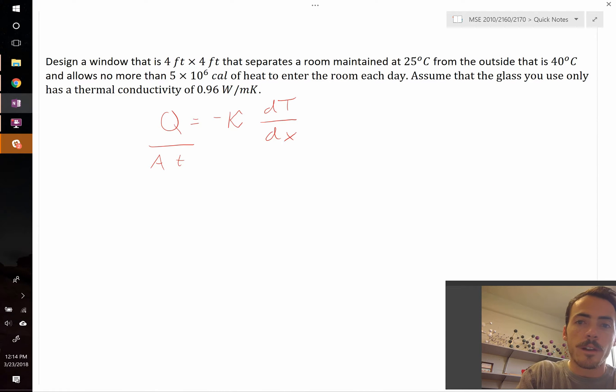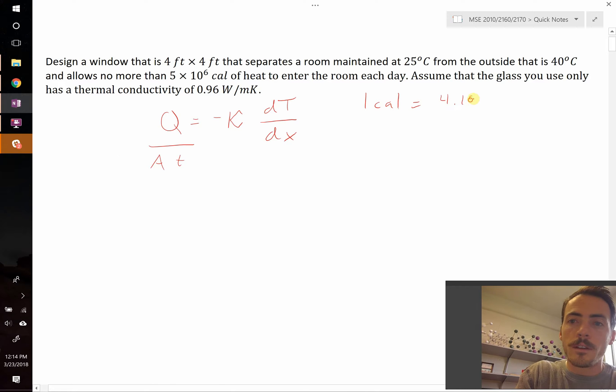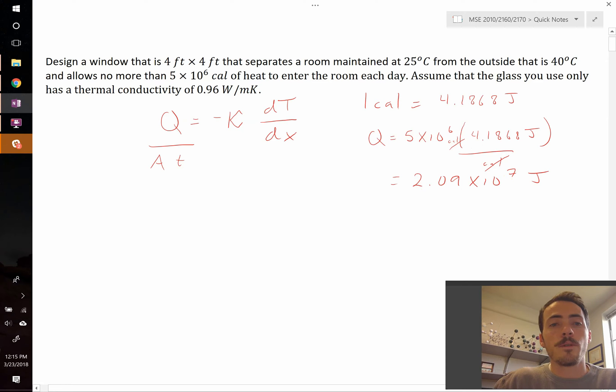We know that one calorie equals 4.1868 joules. Therefore total Q is going to be equal to 5 times 10^6 multiplied by 4.1868 joules, and that will cause the calories to cancel out and we'll be left with just joules. I get this value to be 2.09 times 10^7 joules. So that's the total amount of heat that's allowed to enter per day.